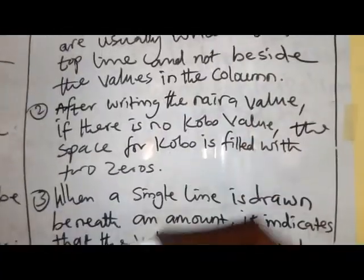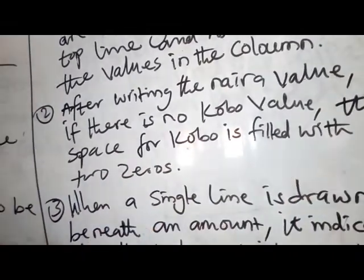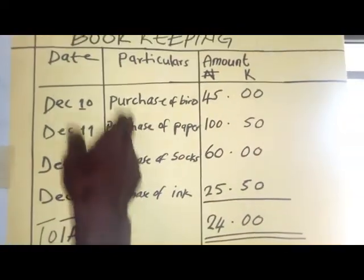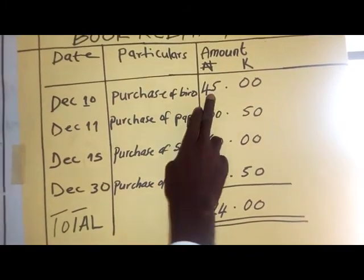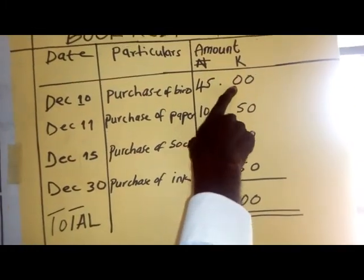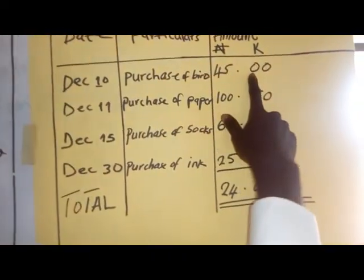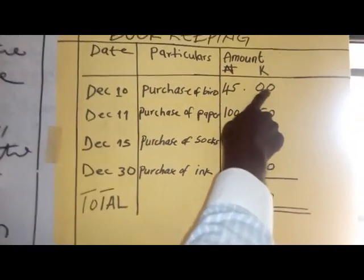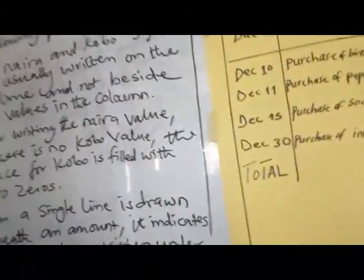Number two: after writing the naira value, if there is no kobo value, the space for kobo is filled with zeros. For example, on December 10th, a person made a purchase of a biro at the rate of 45 naira. There is no kobo value, so it is written as zero zero. Instead of leaving the space blank, you are guided by the practices to cover the space with zero zero.